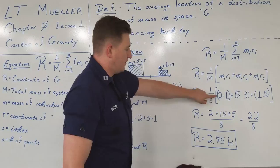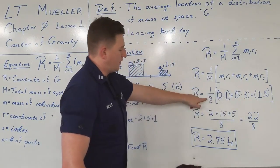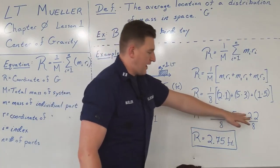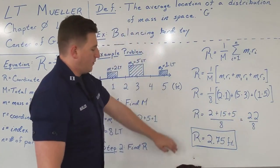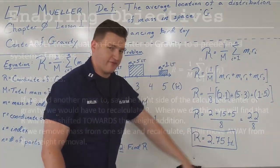So we have R equals two, plus 15, plus five, all divided by eight. So here, adding them together, get 22 over eight, or in decimal terms, R, the coordinate of the center of gravity, equals 2.75 feet.